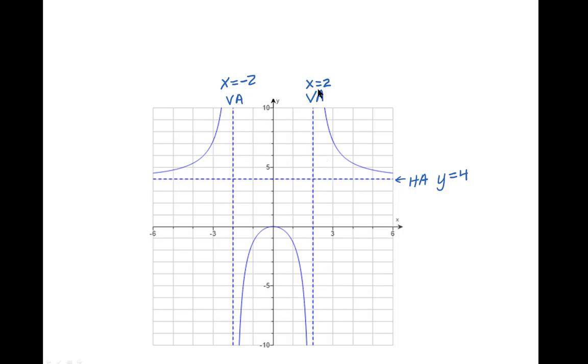The vertical asymptotes and the horizontal asymptotes form a kind of frame for the arms of the graph of your rational function.